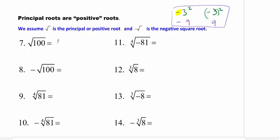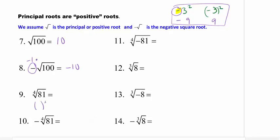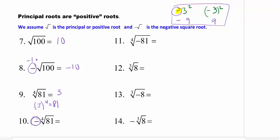Number 7: the square root of 100 is a positive 10, because what comes out has to be positive. Number 8: the answer is negative 10. Remember, this is the same idea as having a negative out in front — it's actually negative 1 times the square root of 100, so the negative stays. That's why I've mentioned to circle it so you make sure you keep it. Number 9 is asking what to the fourth power would give me 81. Guess and check — 3 works. Since we're dealing with an even root, we get a positive answer coming out of the radical.